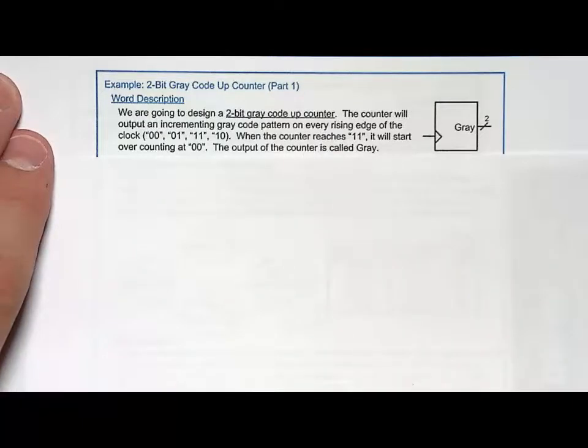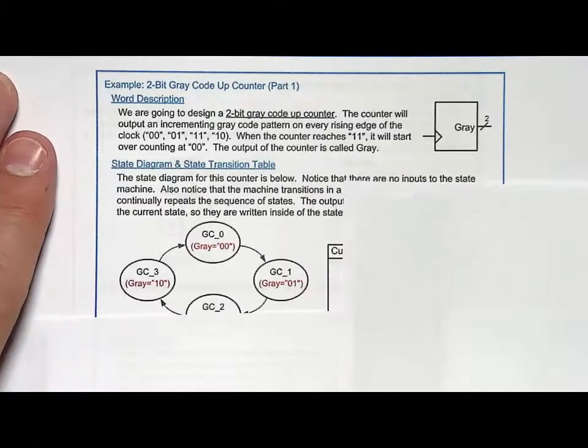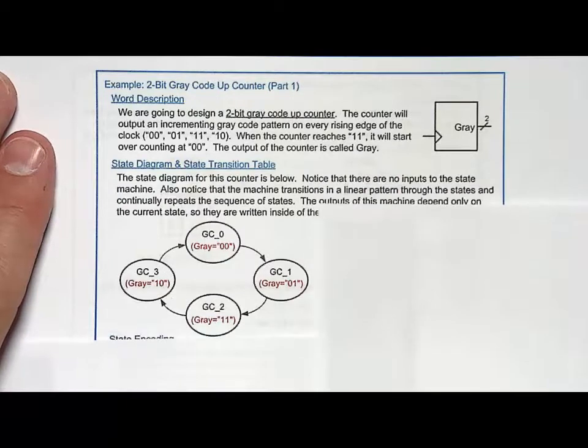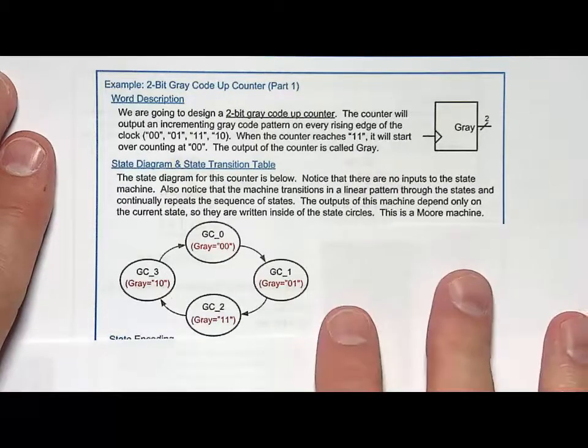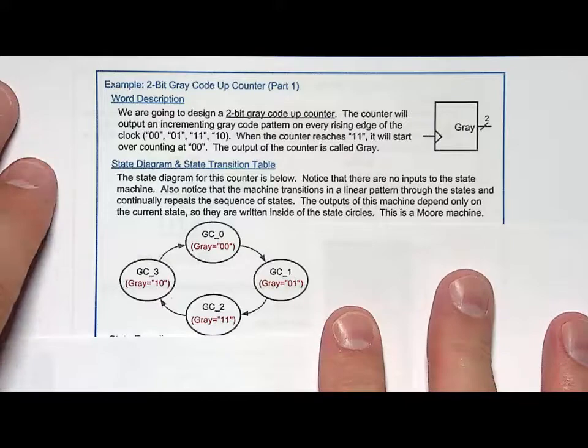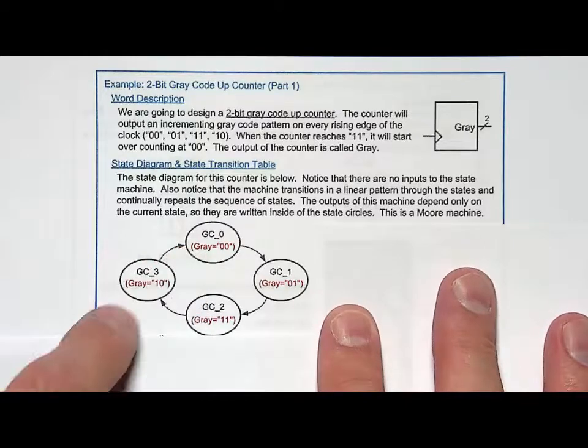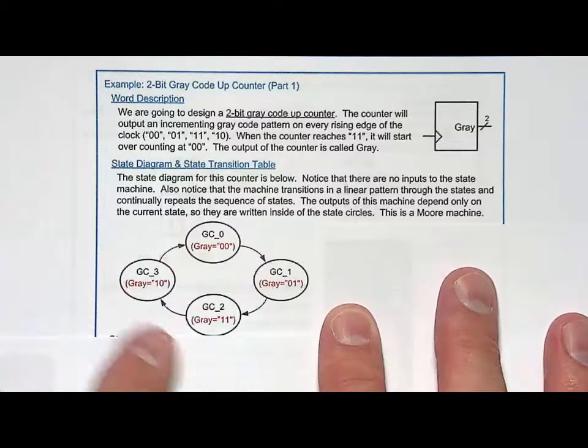Now let's look at the state diagram for this. The state diagram is going to be pretty simple. We are going to just have four states. Let's name them something pretty descriptive. Let's name it GC for gray code. And we'll go GC0, GC1, GC2, GC3.